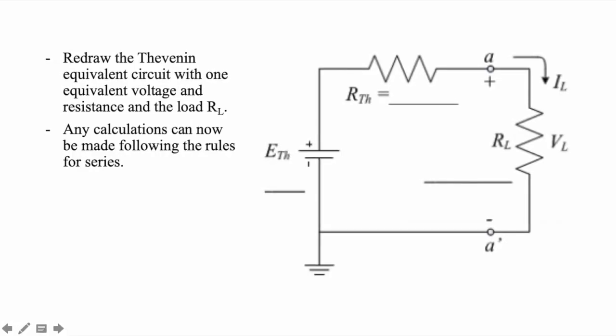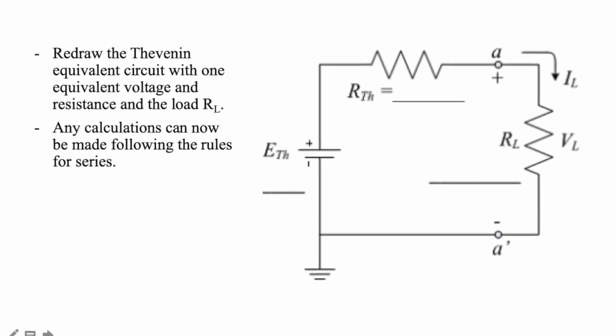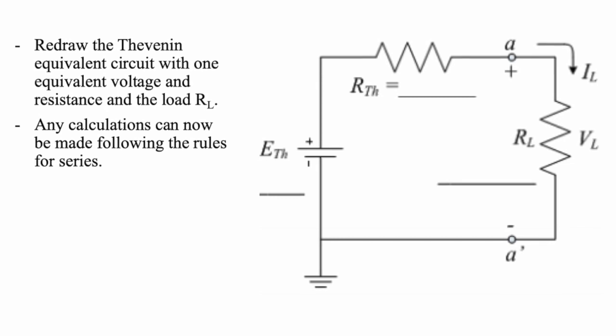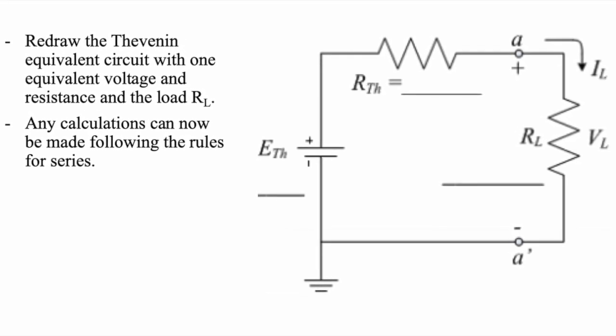Lastly, redraw the Thevenin equivalent circuit with one equivalent voltage and resistance and the load RL. Any calculations can now be made following the rules for series circuits.